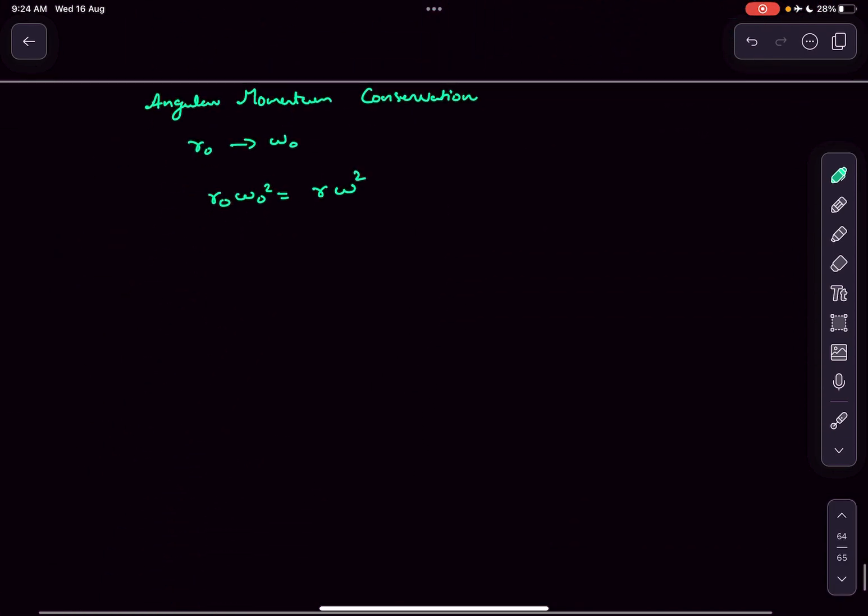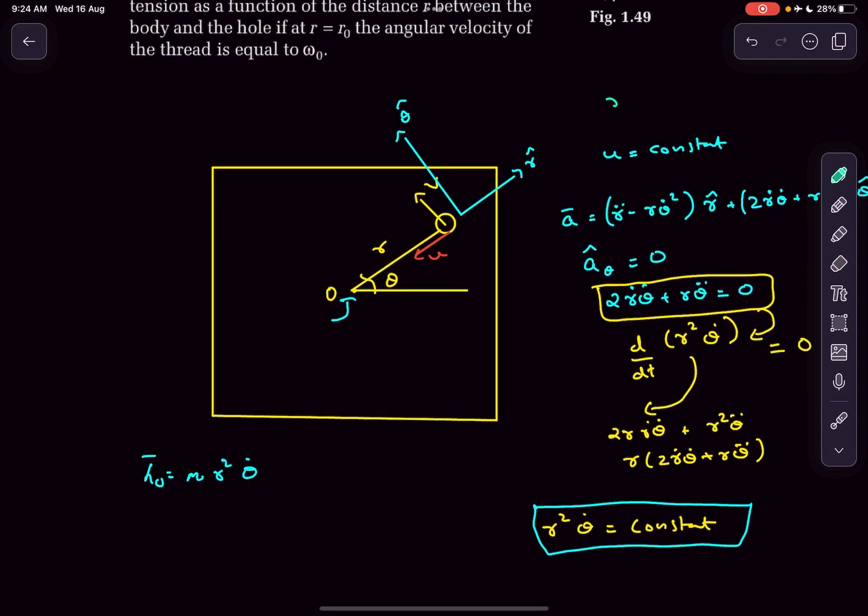If I draw the FBD of mass m, it has tension T acting radially inward. Borrowing the radial acceleration result, it's r double dot minus r theta dot square. Now r dot is minus u, so r double dot is 0.